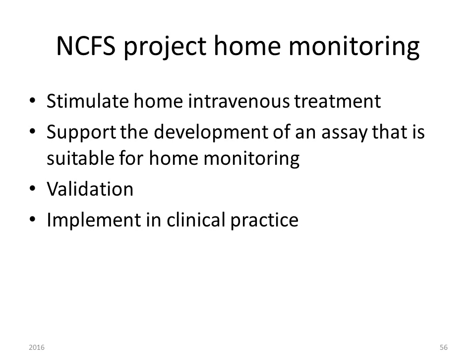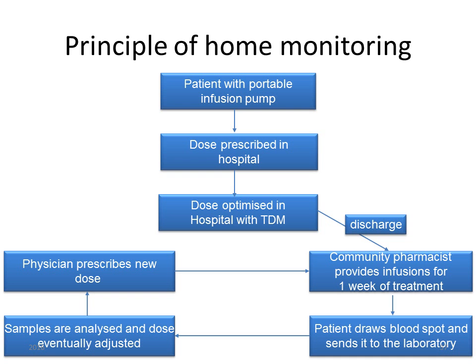The Dutch Foundation for cystic fibrosis advocates home intravenous treatment and supports development of an assay suitable for home monitoring of tobramycin. An assay must be developed, validated, and implemented in clinical practice. The patient receives a portable infusion pump; the first dose is prescribed and optimized in hospital using TDM. After discharge, the community pharmacist provides infusions for one week; the patient draws blood samples and sends them to the laboratory; the dose is adjusted and the new dose is prescribed, completing the cycle.